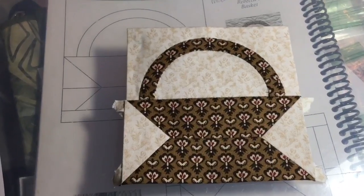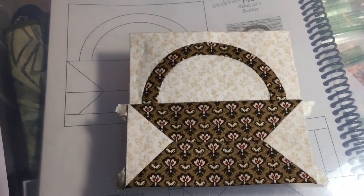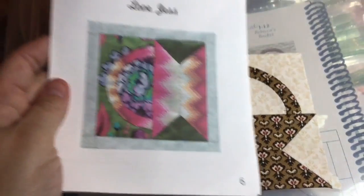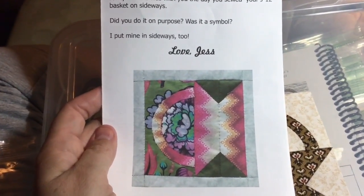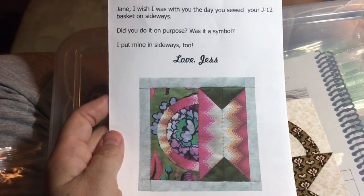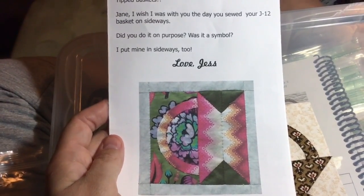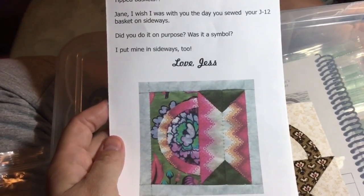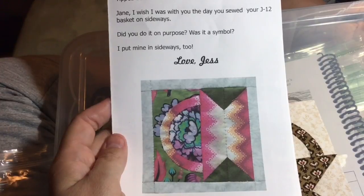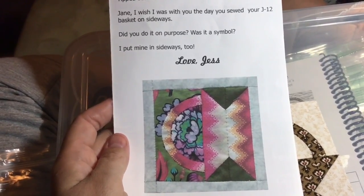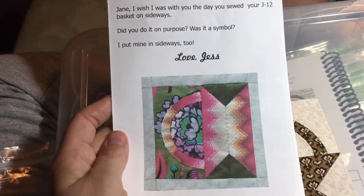So now I have a completed J12 block. You will notice in the paper pieces booklet there's a note from Jess about her putting her basket sideways. What you will see in the picture of the Dear Jane quilt is that the basket for J12 is pictured sideways. I'm not exactly sure where I heard this from, but my understanding is that the quilt was displayed 90 degrees and the block that we all know is A1 is really supposed to be A13.